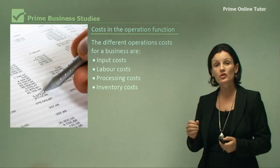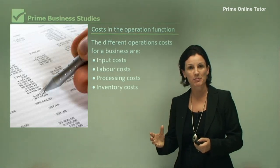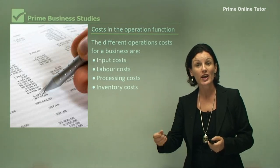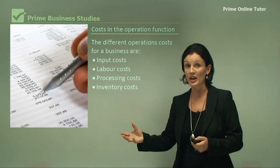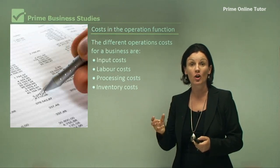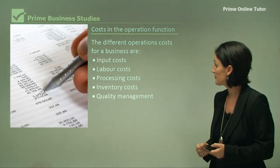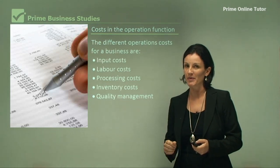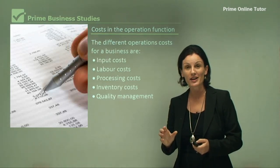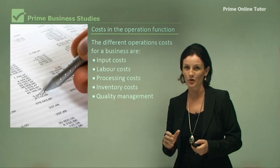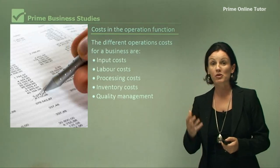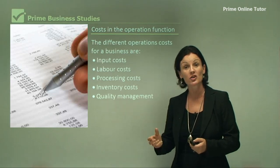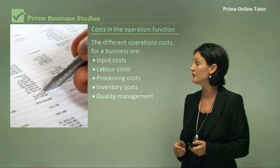Our inventory costs means storing our products. Even our inputs need to be stored, our unfinished products need to be stored and our outputs need to be stored. Storage is a very big cost for a business. Quality management these days is crucial for the operations manager. If they don't have a quality product, consumers are not going to want their good or service. So products need to be checked continually along the way. That is time consuming and therefore it's costly for the business.